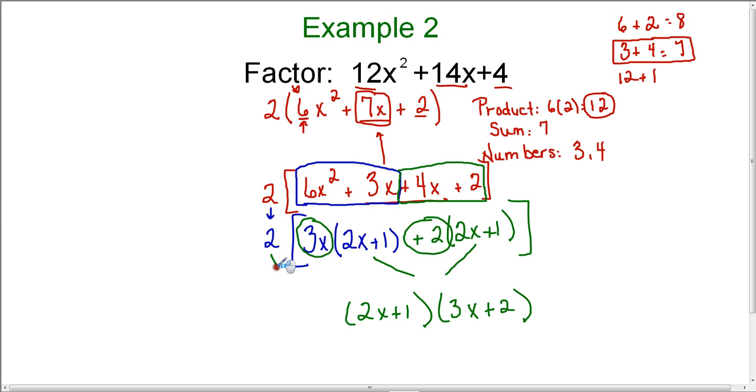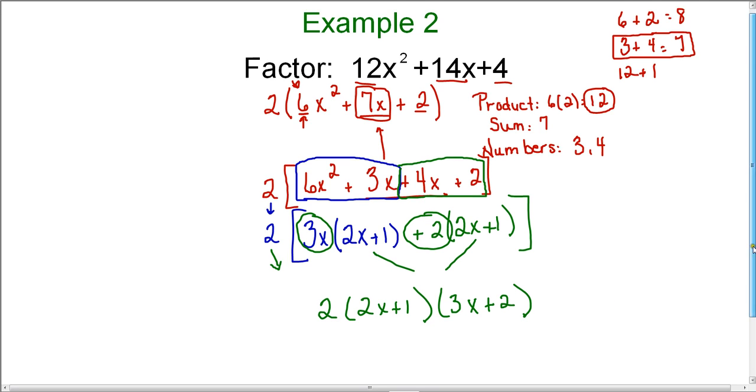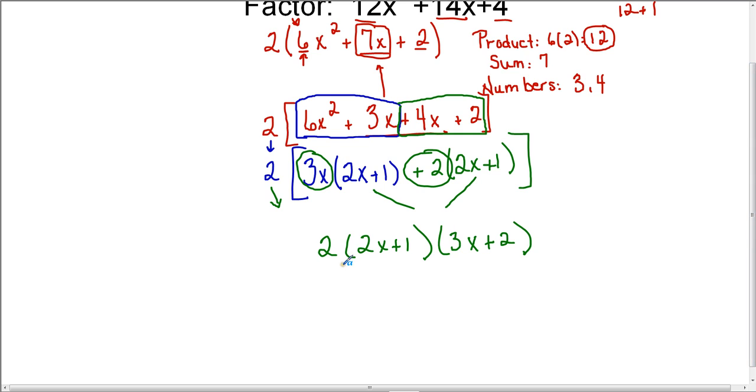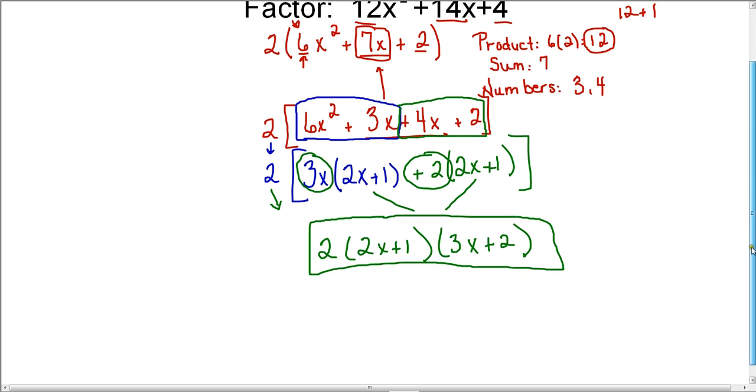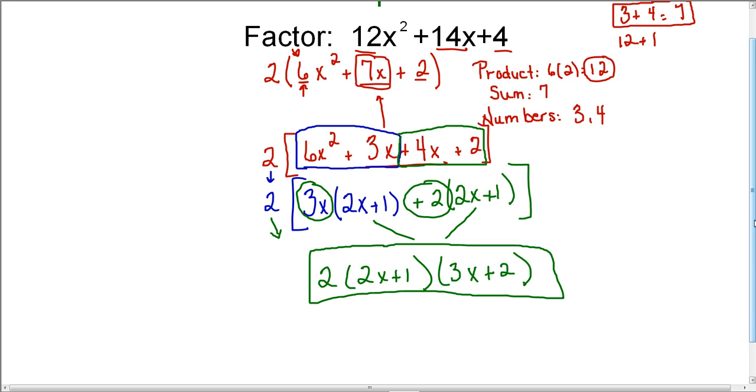I can't forget to bring down the 2 that I already factored out. So I end up with 2(2x + 1)(3x + 2). This is the factored form for 12x² + 14x + 4.